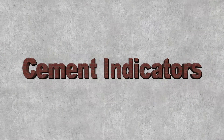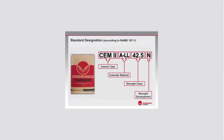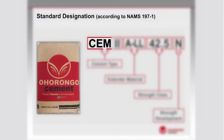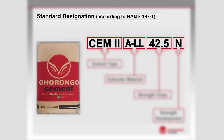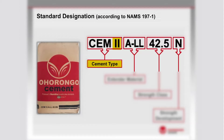Cement indicators: the description of the different cement types is made up of different sections. Let's look at CEM 2 ALL 42.5 N as an example. CEM represents ordinary cement produced from clinker. The 2 represents composite cement, which means it contains other extenders additional to only clinker. The ALL is a description of the additives in the cement.